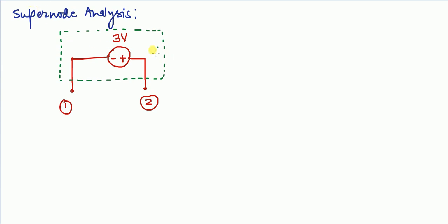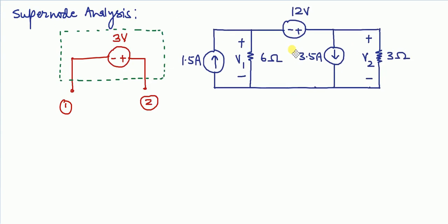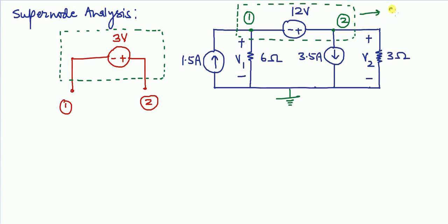Let's see one example of a super node. In this circuit, this is node one and this is node two. Node one and node two are non-reference nodes, and this is the reference node. A 12 volt voltage source is connected between two non-reference nodes, so here we have a super node. To find the voltages V1 and V2, we need to apply one KCL for this super node and one KVL to find the relation between V1 and V2.